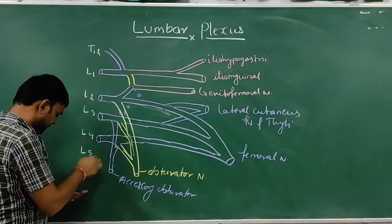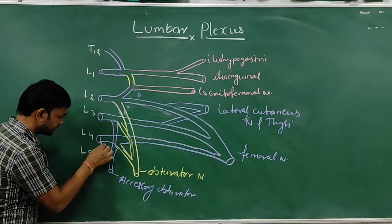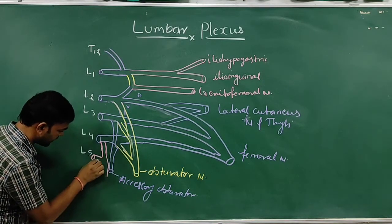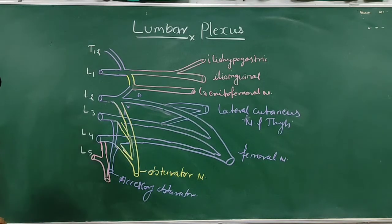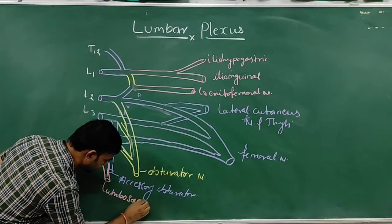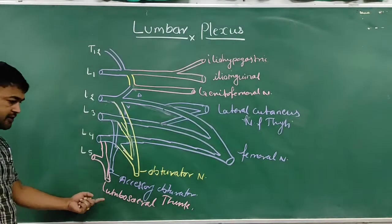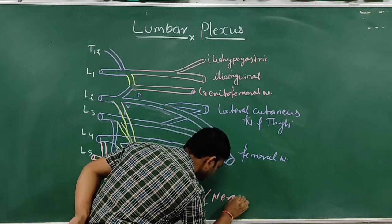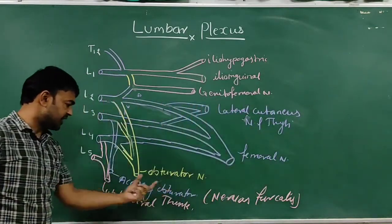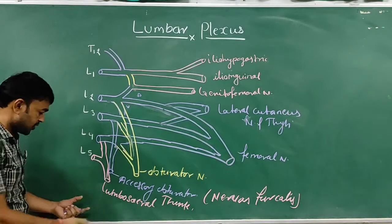A small part of the dorsal branch combines with the L5 nerve to form the lumbosacral trunk. This lumbosacral trunk is also known as the nervus furcalis.